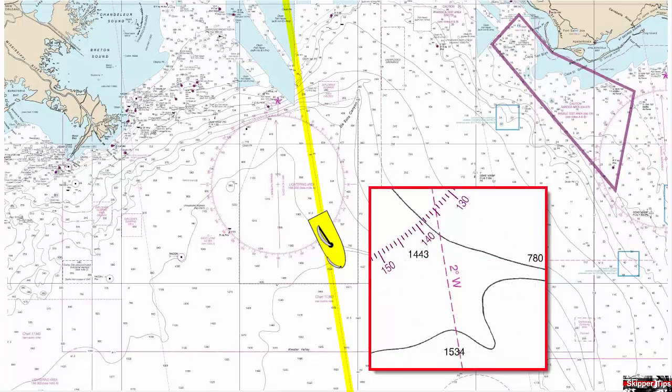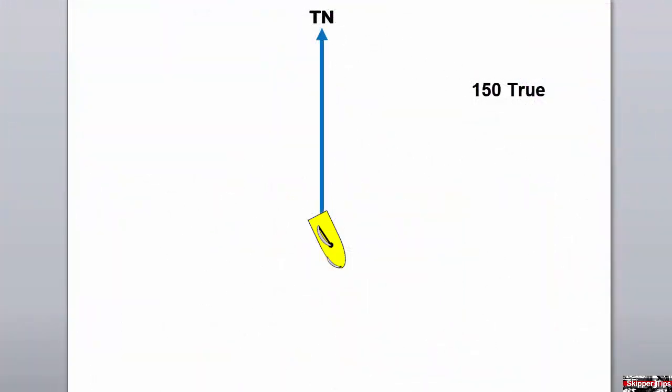Now let's draw a compass diagram to find the magnetic course to steer. Your true sailing course will be 150 degrees. Draw a line straight up as shown by the blue line and label this line TN, which stands for true north. Draw another line to represent your sailing course. Draw an arrow from the TN line to the sailing course. Label this TC for true course.